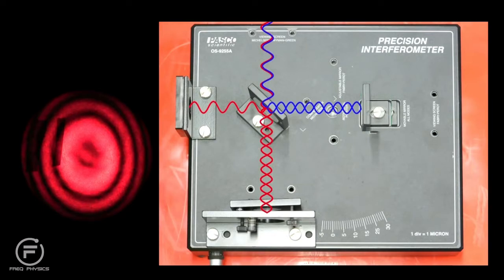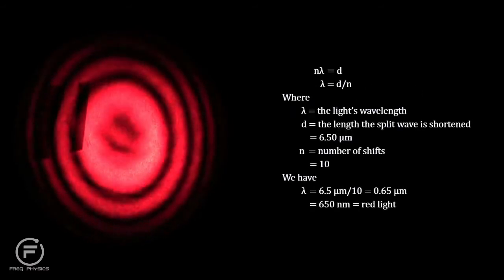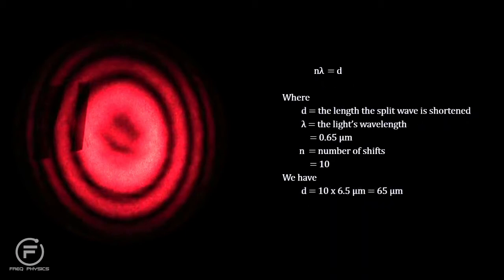As we continue to shorten the path for the split wave, we can count the number of fringe shifts. In our experiment, we shortened the wave by 65 micrometers and produced 10 fringe shifts. A simple division gives us the wavelength. So knowing the distance and counting the shifts gives us the wavelength. But as we'll see shortly, the important thing for us to note is that knowing the wavelength and counting the shifts gives us the distance the split wave was shortened.